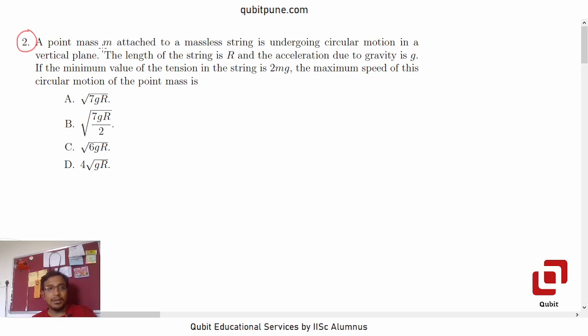Let's read the statement. A point mass M attached to a massless string is undergoing circular motion in a vertical plane. The length of the string is R and the acceleration due to gravity is G. If the minimum value of the tension in the string is 2mg,